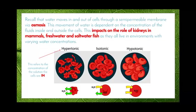In an isotonic solution, we have an even concentration of water inside and outside the cell, so there is no net movement into or out of the cell. There is a constant movement in both directions, and our cells stay nice and healthy.